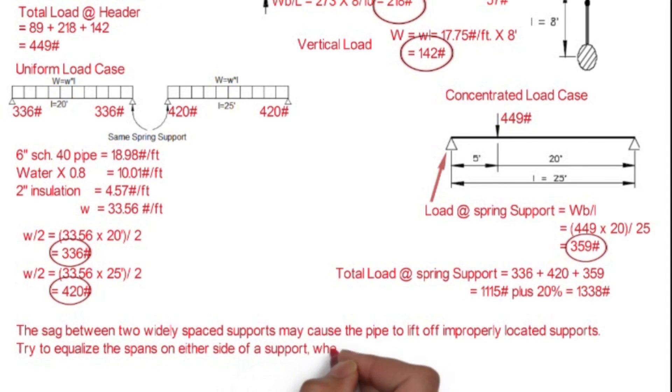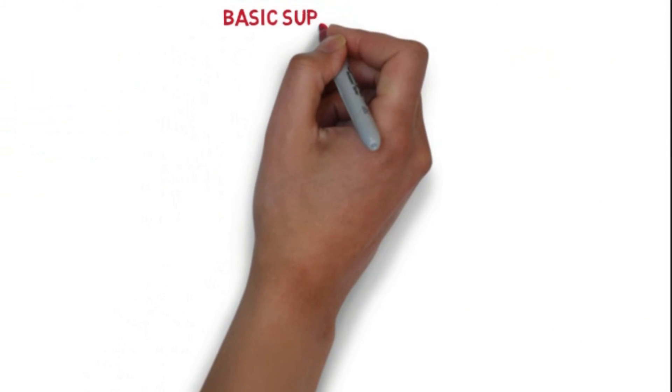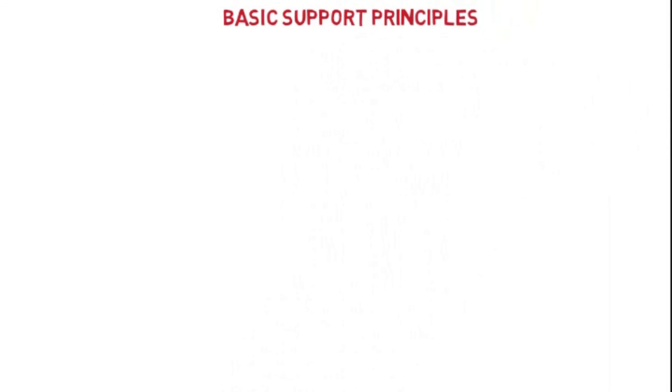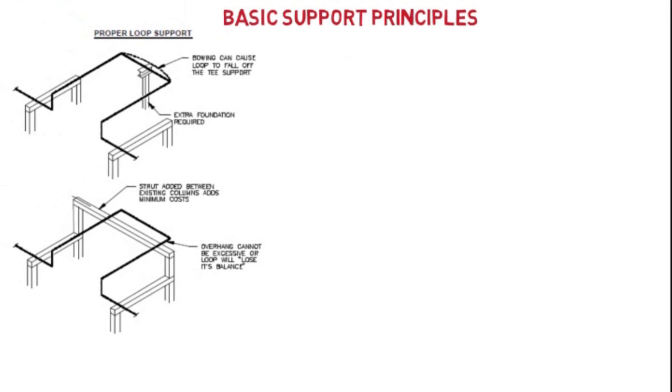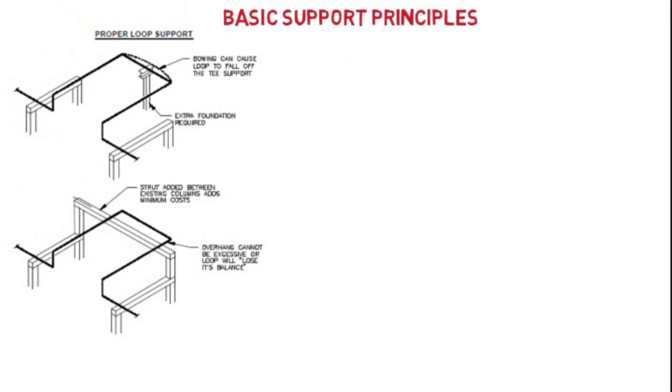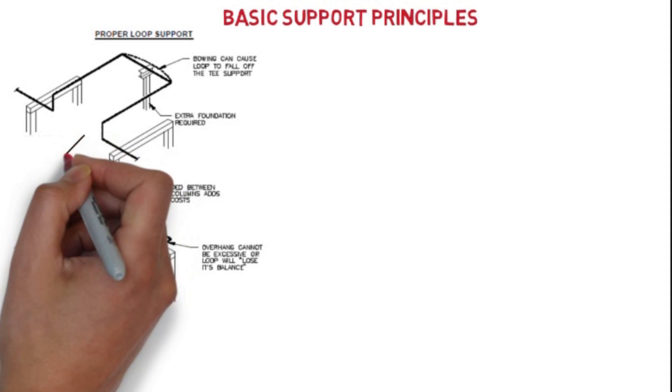Here I am going to share some of the basic support principles. If you are providing support for the loop, please consider the second arrangement. It will be better, it will be cost-saving because we are not providing any additional T-support for which we require foundation. And in the first case, pipe may fall off due to the expansion.